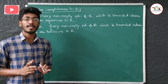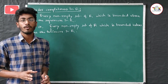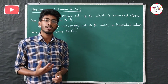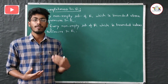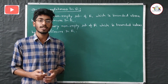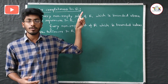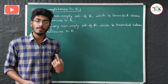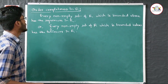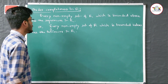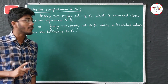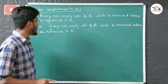To understand this, we need to know about upper bound, lower bound, infimum, and supremum. If you have watched the previous video where those concepts were discussed, then you can continue. So here, Order Completeness Property in R means: every non-empty subset of R which is bounded above has the supremum in R.